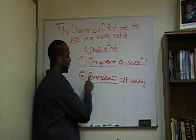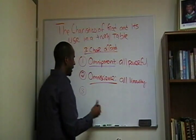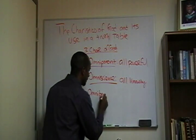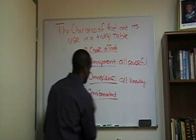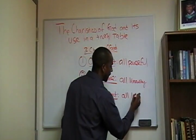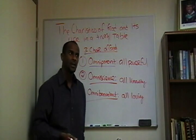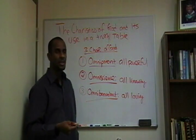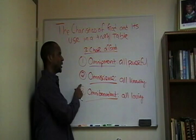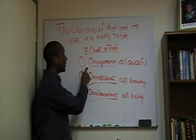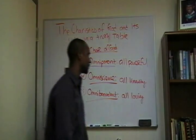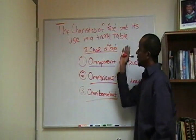So, God is omnipotent — all-powerful. God is omniscient — all-knowing. And lastly, God is omnibenevolent — benevolent meaning loving, so God is all-loving. God loves the worst of us; there's always the possibility for redemption. These are the three characteristics: omnipotent, omniscient, and omnibenevolent.